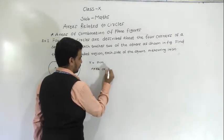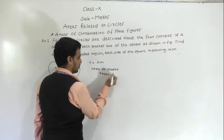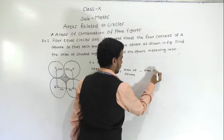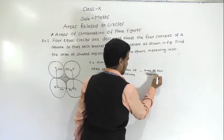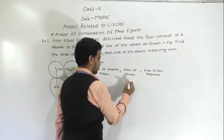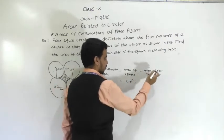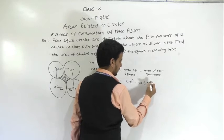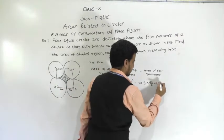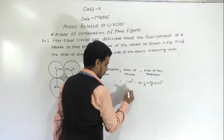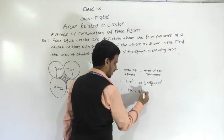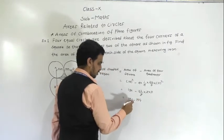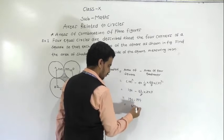Area of shaded region equals area of square minus area of four quadrants. Area of square is side squared, so 14 squared. Minus 4 times the area of one quadrant, which is (1/4) × π × R². With π = 22/7 and R = 7: 14² − (22/7) × 7 × 7. The 7 cancels, giving 196 − 154 = 42 cm².